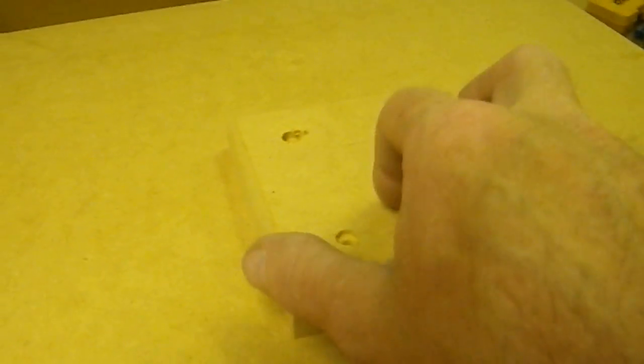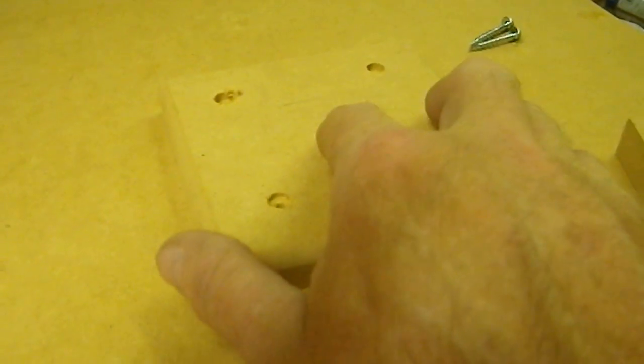The problem with that was sometimes when you get the glue spread out, it'll like to squirm around. If it squirms just a little bit this way or that way, you might end up with the hole off-centered. It might be a little bit off-centered.